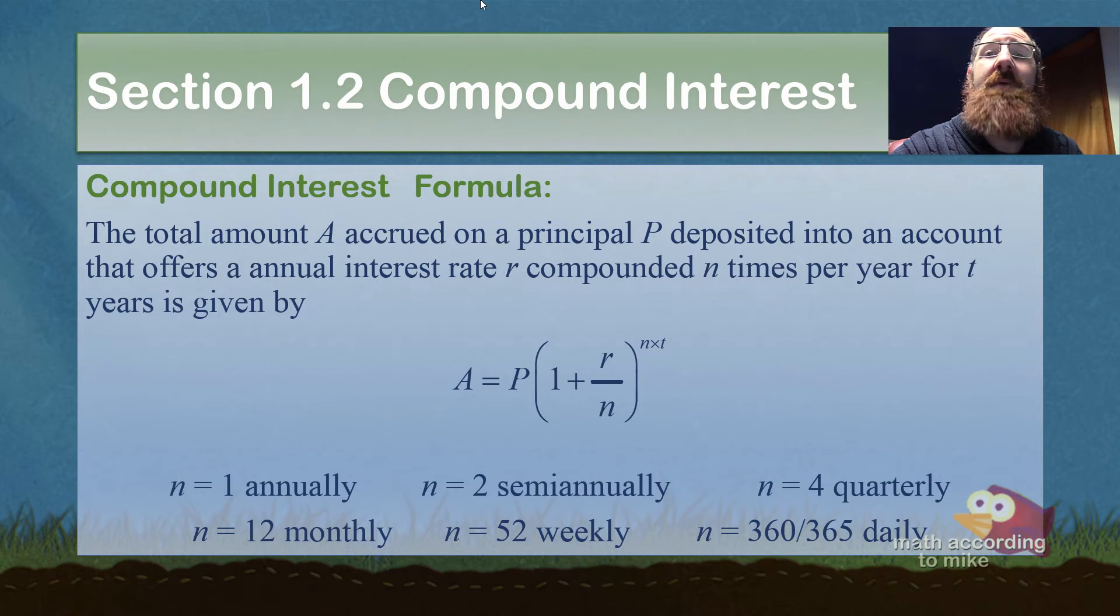So now let's discuss the compound interest formula. As it says there, the total amount A accrued on a principal capital P deposited into an account (there's a typo, but not yet) that offers an annual interest rate lowercase r compounded n times per year for t years is given by the formula: A equals P times the quantity 1 plus r over n raised to the n times t.